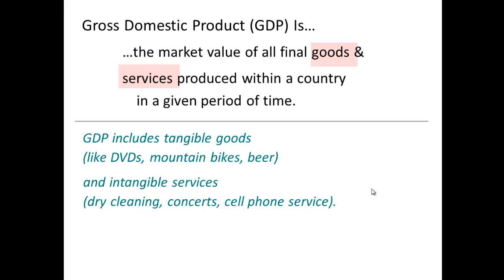The intangibles, or services, would be things like tax preparation before April 15th. It would include maid service, having your car washed or detailed, and also the education that you receive when I stand before you in the classroom. That's a service.